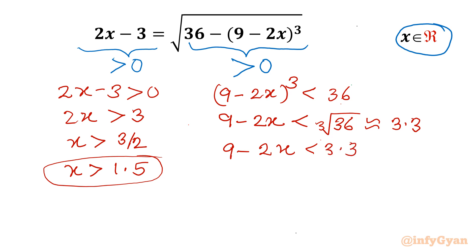So I will write 9 minus 2x should be less than 3.3. Take 3.3 to the left and 2x to the right, so 9 minus 3.3 is 5.7, which should be less than 2x. Divide this inequality by 2, so x should be greater than 2.85.